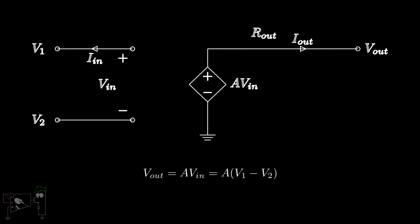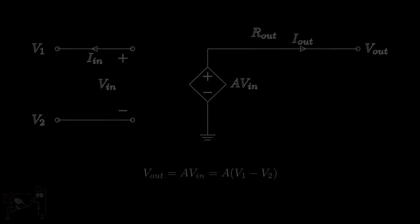Other than these, there are a few more characteristics of ideal op-amps such as infinite bandwidth, infinite common-mode rejection ratio, and an infinite slew rate. But we will take a look at these later.